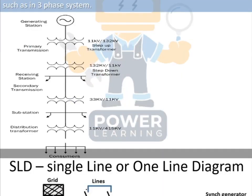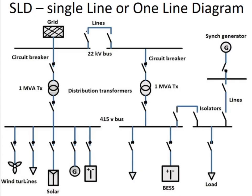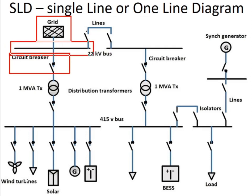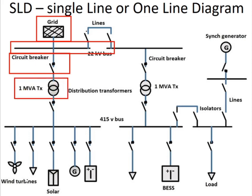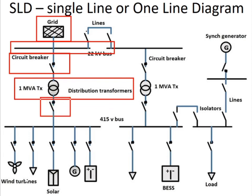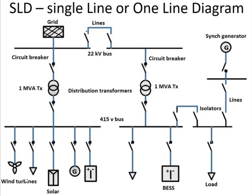Here is another example of a single line or one line diagram. One box represents the entire grid, followed by a circuit breaker and a common bus — a 22 kV bus. Then we have a 1 MVA distribution transformer, an output breaker, and a 415-volt low voltage bus.